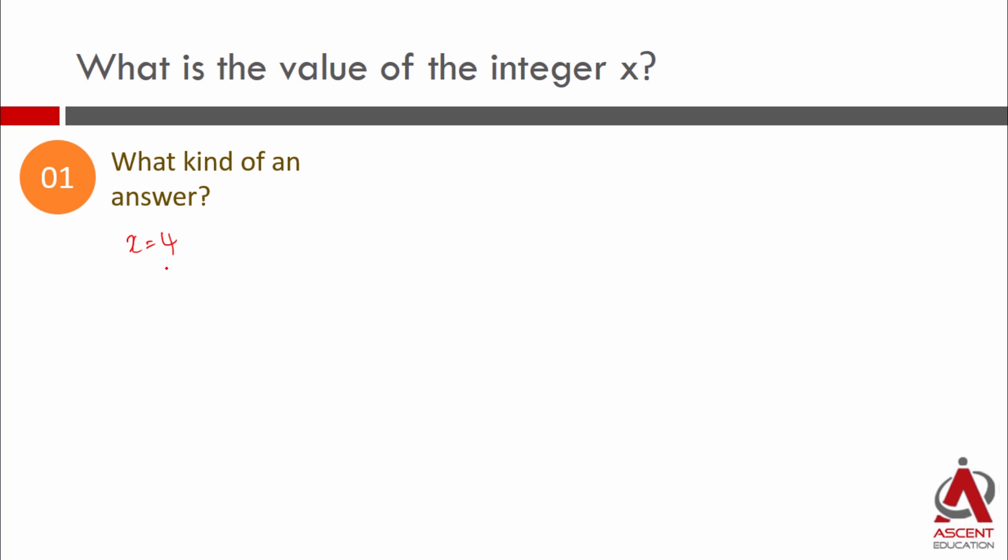If we can determine a specific value, then we have an answer to this question. In all data sufficiency questions, the data is sufficient when you're able to get a unique value.